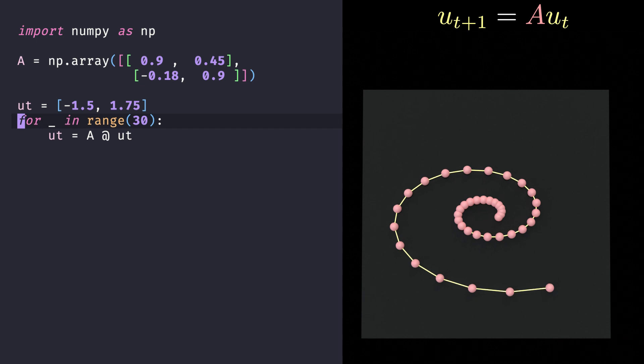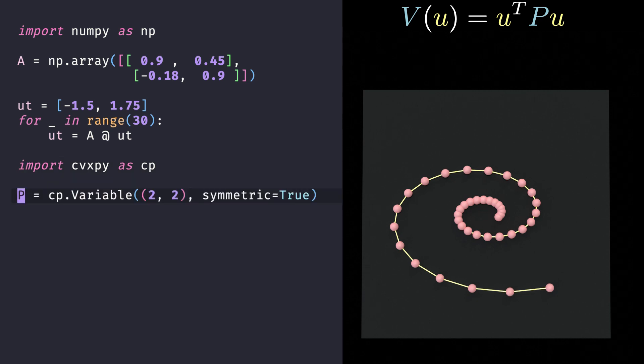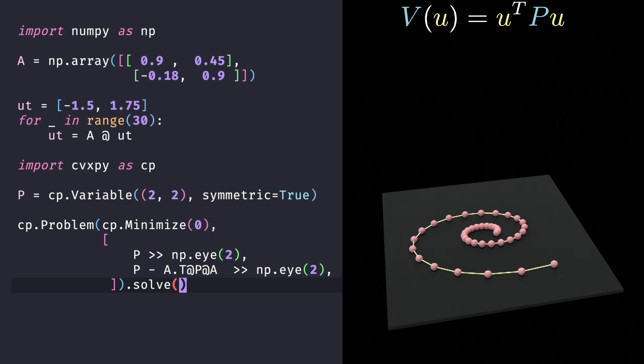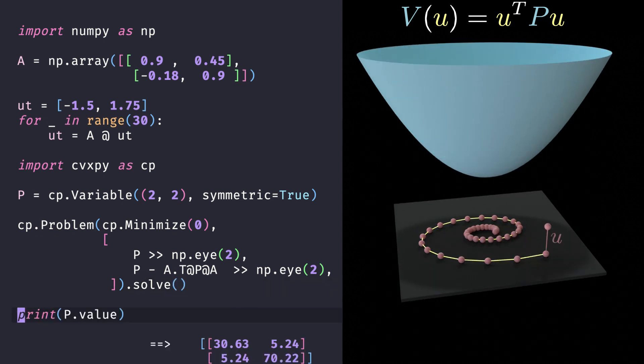So let's look for a Lyapunov function of the form u transpose pu with semi-definite programming. As usual, we import the package cvxpy, we declare a matrix p to which we impose the Lyapunov constraints we talked about, and we call the solve method. And just like that, we obtain the following Lyapunov function, which shows that our dynamical system is indeed asymptotically stable.